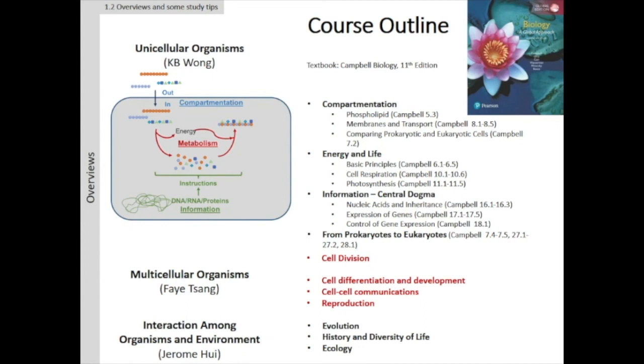It's still the 11th edition. Whenever my slide says Campbell 5.3, it means chapter five, session three of that textbook, so you have some reference point where to read more about the lecture. For example, this part would be 5.3. These are the numbers corresponding to the lecture I'm going to talk about. Multicellular organisms, Fei Zhang will talk about cell differentiation, development, and these topics.